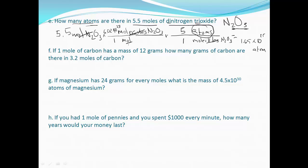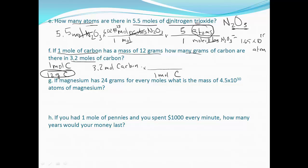Now let's incorporate grams. If one mole of carbon has a mass of 12 grams, we can say one mole of carbon is equivalent to 12 grams of carbon. Starting with 3.2 moles of carbon and converting to grams: one mole of carbon equals 12 grams, so 3.2 times 12 gives us 38.4 grams of carbon.